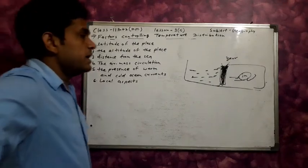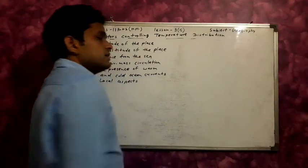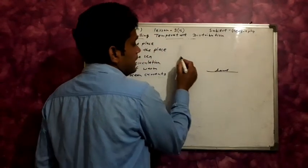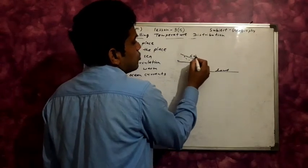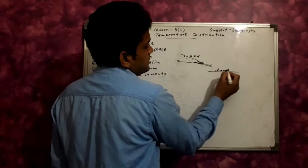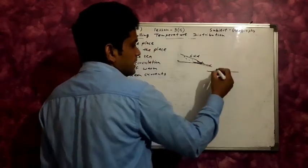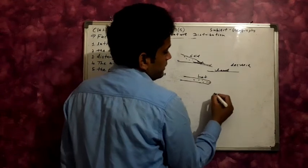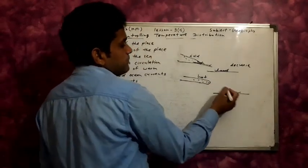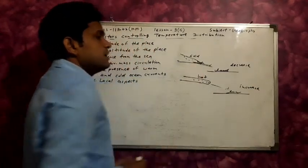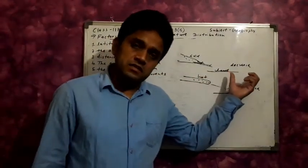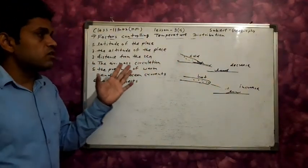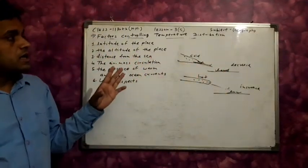The fourth factor is air masses circulation. Air masses circulation also affects temperature. Cold air masses — cold winds — passing over a land part decrease the temperature of that region. Hot winds or hot breezes passing through the land part increase the temperature. So cold winds decrease temperature and hot winds increase temperature — air mass circulation controls temperature distribution.